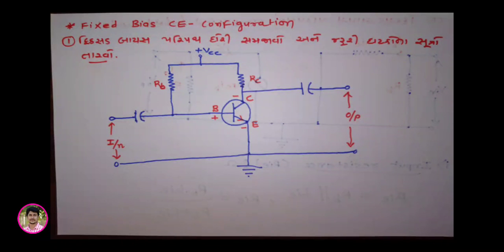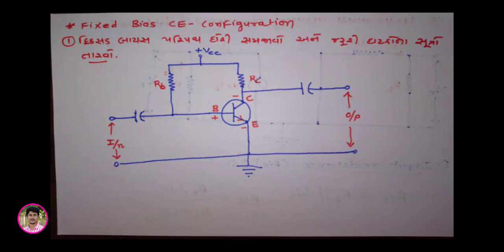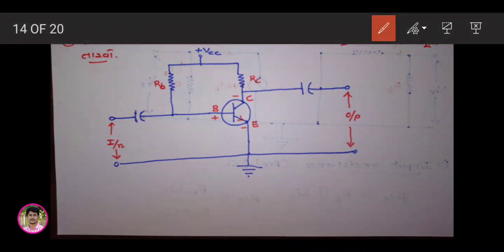After that, we will look at: current gain, voltage gain, input resistance, output resistance, and power gain. We will understand all these calculations one by one.